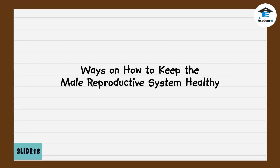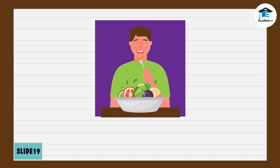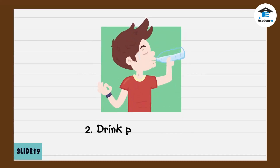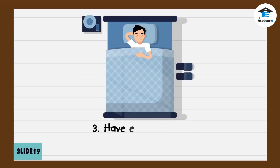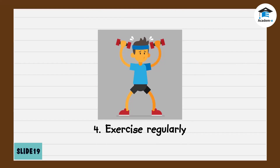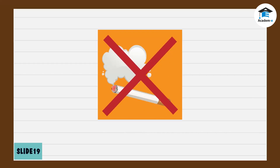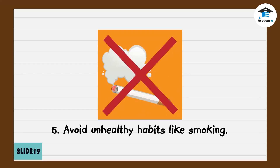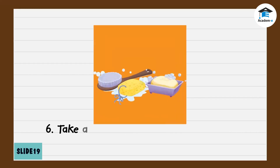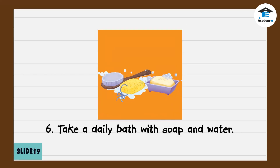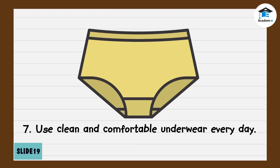Ways on how to keep the male reproductive system healthy: one, eat healthy food; two, drink plenty of water; three, have enough sleep; four, exercise regularly; five, avoid unhealthy habits like smoking; six, take a daily bath with soap and water; seven, use clean and comfortable underwear every day.